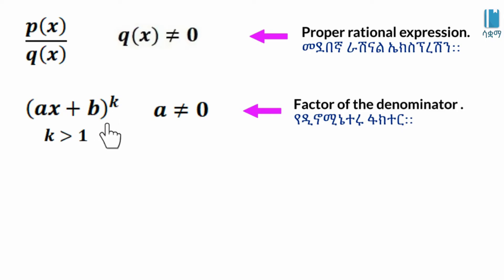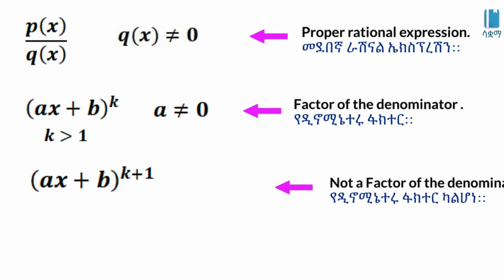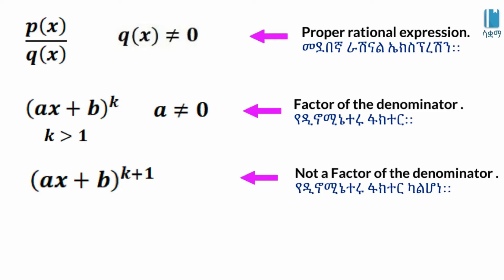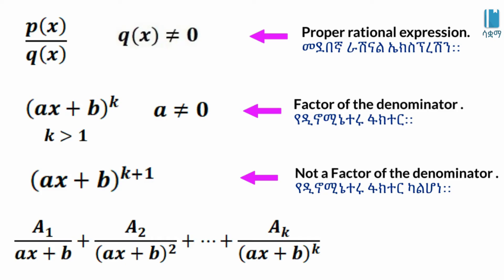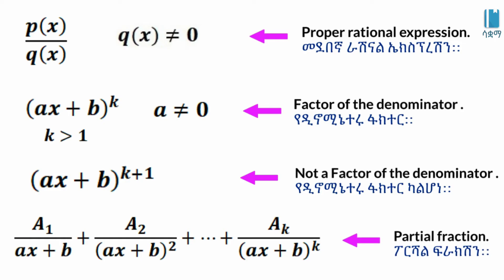It is equal to k. The denominator contains x plus b to the power of k. When k is greater than 1, we introduce partial fractions: A1 over x plus b, plus A2 over x plus b squared, continuing up to Ak over x plus b to the power of k.